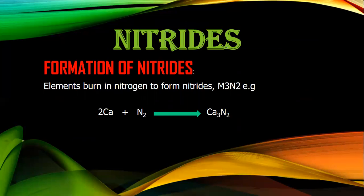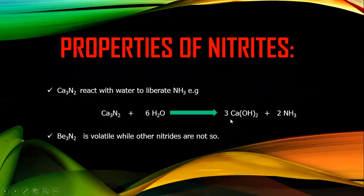The next topic is nitrides. Alkaline earth metals have the ability to react with nitrogen to give nitrides. For example, calcium reacts with nitrogen to form calcium nitride, Ca3N2. Nitrides react with water to produce calcium hydroxide and ammonia. Beryllium nitride is volatile while other nitrides are not.